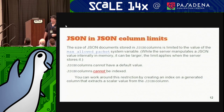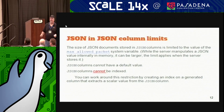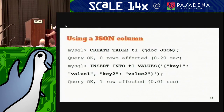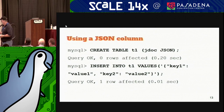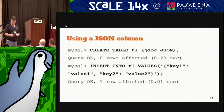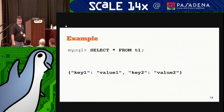If you're on the server, the value for max allowed packet size is a system variable — you change it on your session; it doesn't work on the server. Here's how it works: create a table called T1 with a column called jdoc of type JSON. Insert values key1 value1, key2 value2. When you call it out, you get back key1 value1, key2 value2.